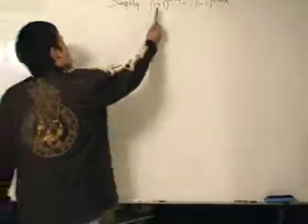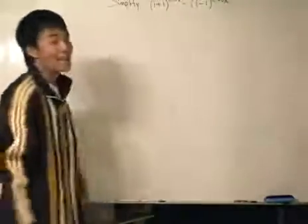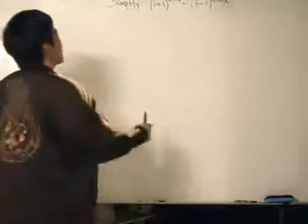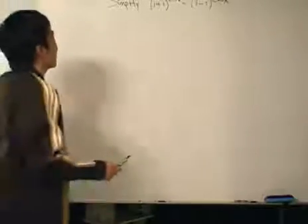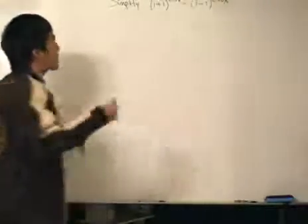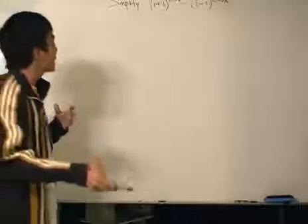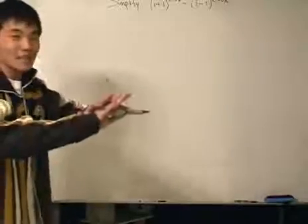You will see in a minute. We got imaginary number plus one to the power of 2008 minus this number over here. Now, you might be intimidated by the large power of 2008. Well, don't be, because as we know about complex numbers, sometimes there's a tendency that they repeat themselves.